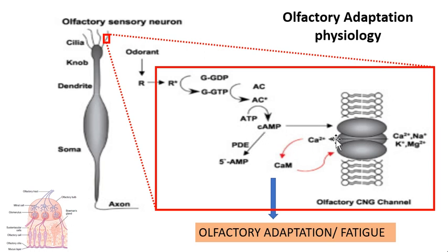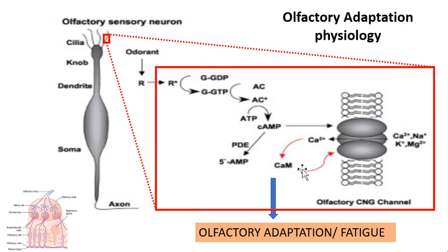So the opening of the channel and calcium influx is why we smell — any odor with an amino acid sequence binds the receptor, causing calcium/sodium influx, and that's why we detect the smell. However, if calcium accumulates further, it binds with the calcium-calmodulin molecule. The calcium-calmodulin complex then inhibits and closes this channel, causing the receptor sensitivity to decrease so we can no longer smell that odor. This decrease in sensitivity due to the calcium-calmodulin complex is called olfactory adaptation or fatigue.